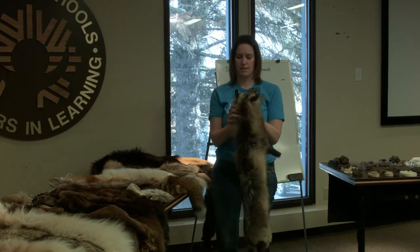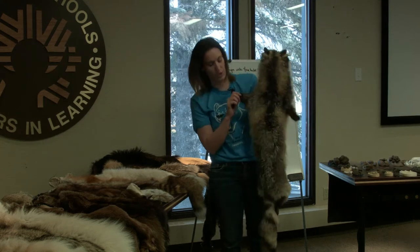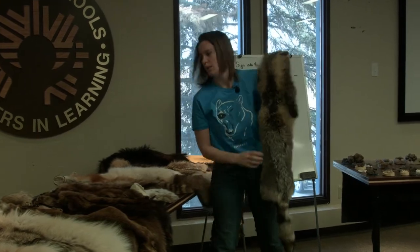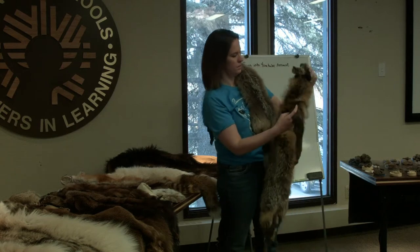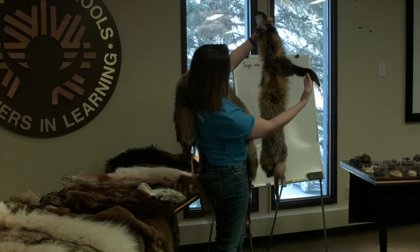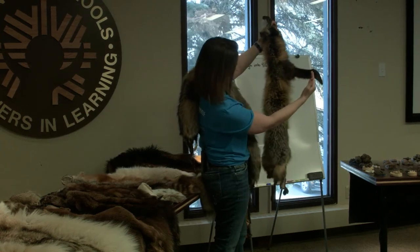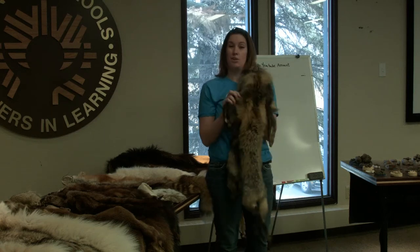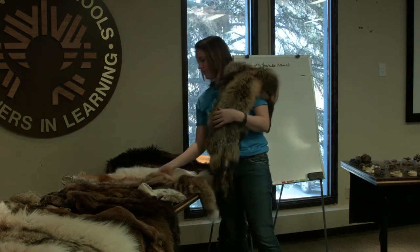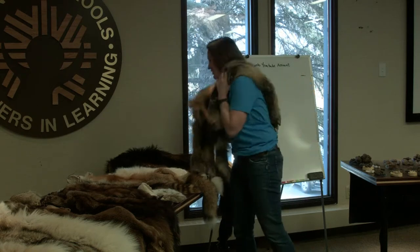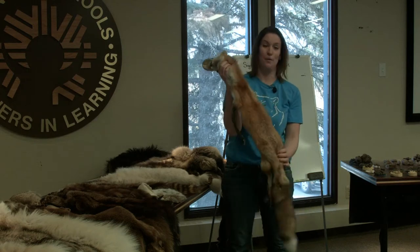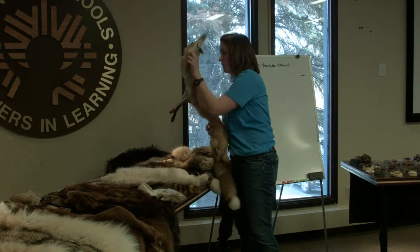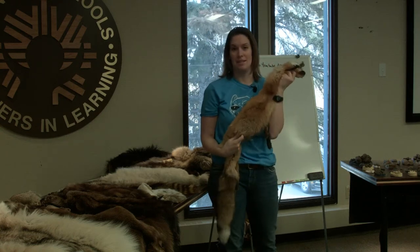Next are my foxes. The first one is a cross fox, called that because if you look at their back on the pelt, they have what looks like a cross down the back and across the shoulders. A cross fox is still a red fox — they just have a different color phase. Our red fox is obviously red, with the big bushy tail. This is one where I could give you just a patch of fur and expect you to identify it as a red fox without the whole pelt.